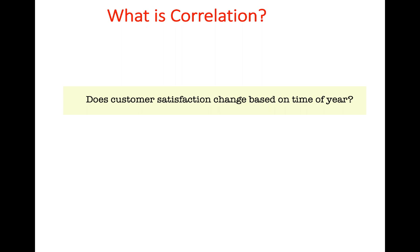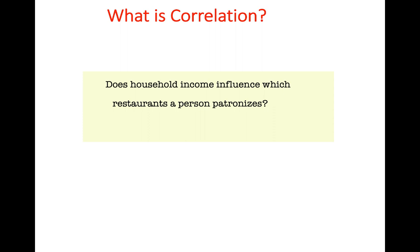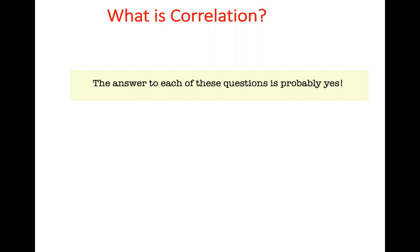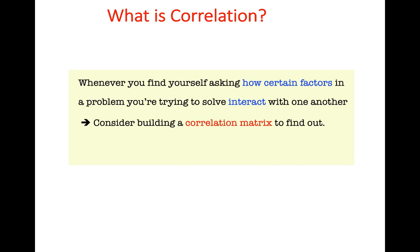Does customer satisfaction change based on time of year? Does the amount of rainfall change the price of a crop? Does household income influence which restaurants a person patronizes? The answer to each of these questions is probably yes. Not only can correlation help us know if that is true, but it can also help us learn how strongly those interactions are when and if they occur. Consider building a correlation matrix to find out what types of relationships you have in your attributes.